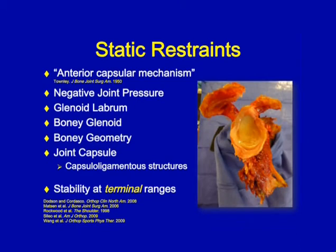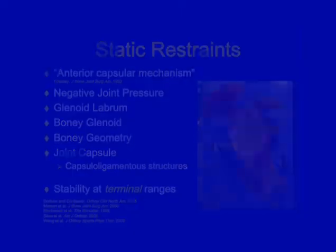Getting into stabilizing structures, we go through static restraints. The notion of the anterior capsular mechanism allows normal lax structures to become taut and provide a barrier to prevent dislocation. Several factors play a key role: negative joint pressure, the glenoid labrum which adds approximately 50% depth to the glenoid, the bony glenoid geometry and how the humeral head sits in the glenoid, and the joint capsule itself, which gives rise to a variety of capsuloligamentous structures. These structures primarily provide stability at terminal ranges as opposed to mid-range.